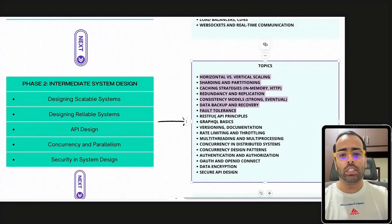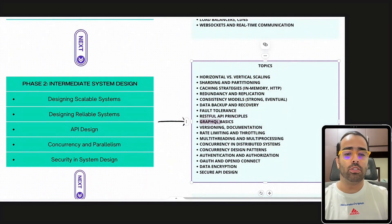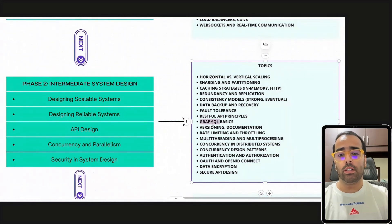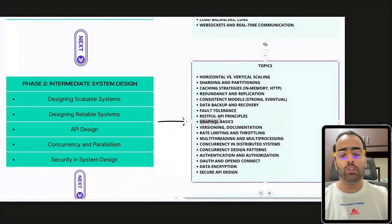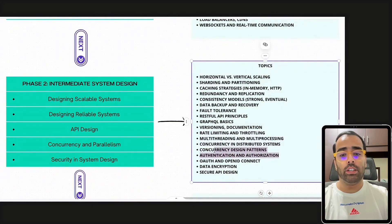For API design, you should be aware of RESTful API principles and GraphQL, which is really trending. You should know how GraphQL works and where to use it, because everything in system design has a trade-off. You should understand when to use GraphQL, how to handle versioning, documentation, and rate limiting. Multi-threading and concurrency and parallelism also fall under this phase.